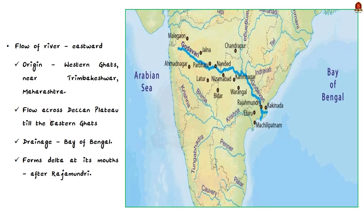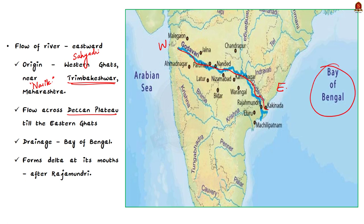Godavari is 1,465 km long with a catchment area spreading over 3.13 lakh square kilometers. It rises from the slopes of the Sahyadri, that is the Western Ghats, near Trimbakeshwar in the Nasik district of Maharashtra. It flows across the Deccan Plateau from the Western to the Eastern Ghats and finally discharges into the Bay of Bengal. It is one of the east-flowing peninsular rivers, originating in the Western Ghats and draining into the Bay of Bengal. After Rajamundry, the river splits into branches forming a large delta.